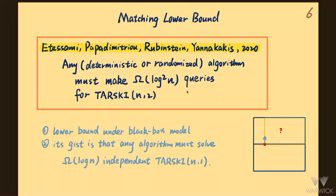In 2020, Etessami, Papadimitriou, Rubinstein, and Yanakakis showed a matching lower bound for the 2D Tarski, proving that any deterministic or randomized algorithm must make at least log^2 n queries for 2D Tarski. It's a matching lower bound. The more interesting part is the intuition behind the proof: you have to solve log n many independent 1D Tarski problems to solve the 2D one, also matching the intuition of the binary search algorithm.